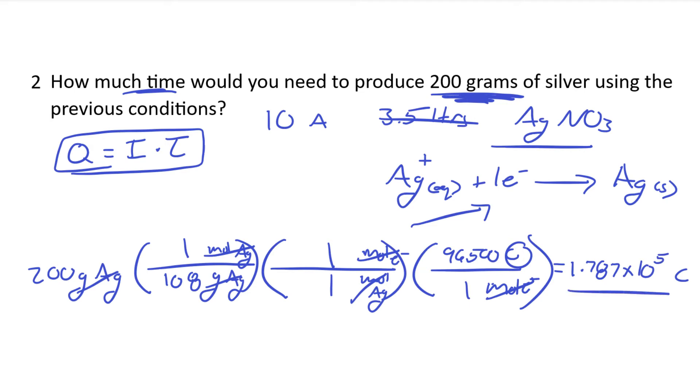But they don't want that. They want time. So we're going to go ahead and plug that in. We know that time is in seconds. They didn't specify. So we can just leave it in seconds. Current we do have. It's 10, so we found what they gave us before. And now we do have charge. So we have to rearrange this equation. In this case, it's going to be time equals our charge over the current.